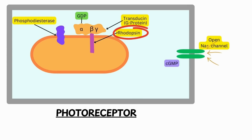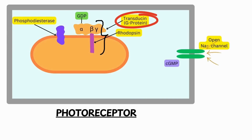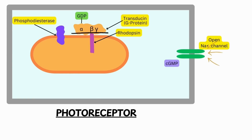Rhodopsin present on the disc membrane is coupled on the cytosolic side to a G protein called transducin. Transducin is a heterotrimeric protein with alpha, beta, and gamma subunits. When GDP is bound to the alpha subunit, transducin is inactive.